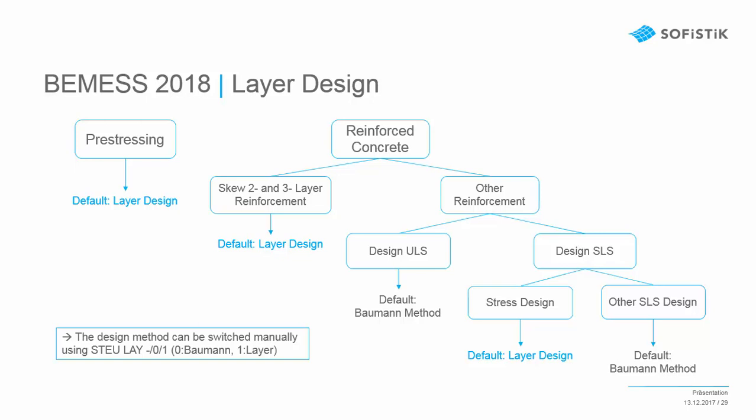Of course if you have only 1,000 elements it is not a problem. But in a big building with 50,000 elements it will take some time. So the default for the ultimate limit state is the Bauman method. Only if we have a prestress system we use the layered design. Or if we have two or three layered reinforcement. Or in the SLS design if we want to make a real stress check. The simple crack width check runs with the old Bauman method by default.